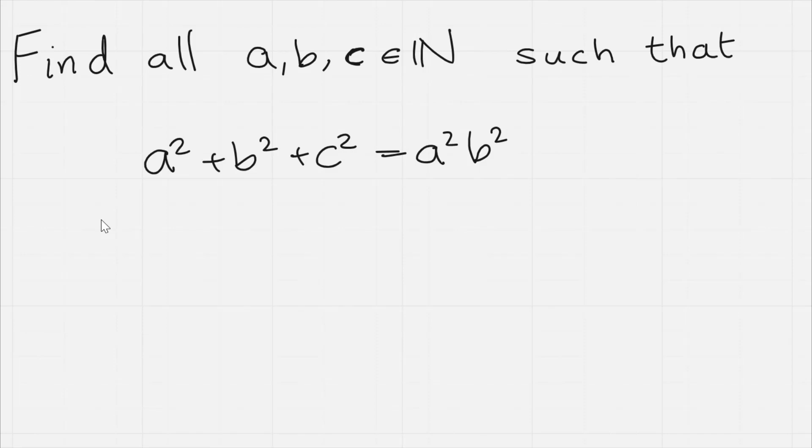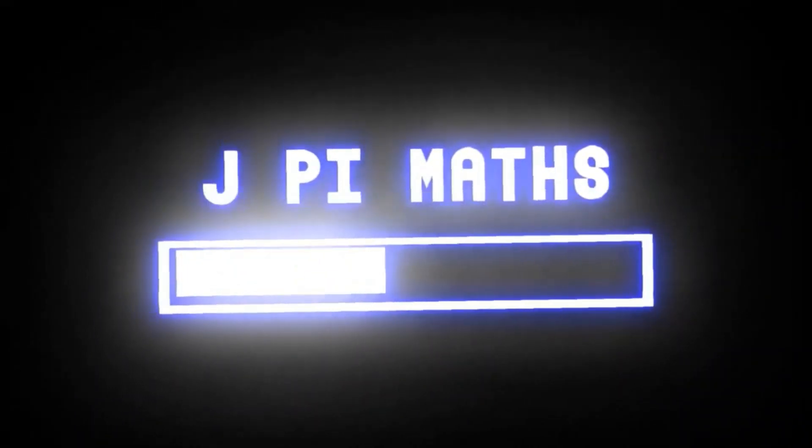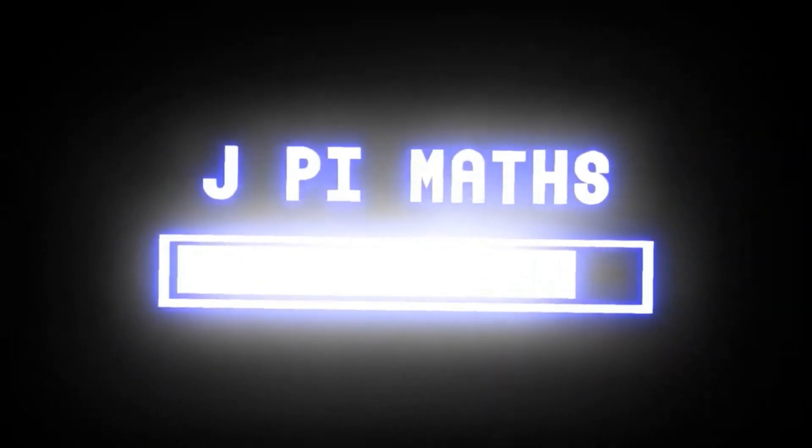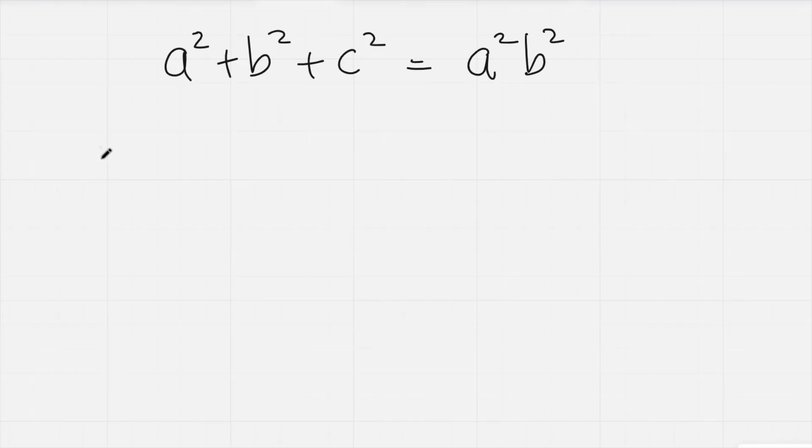Okay, so one of the tricks we're going to use in this solution is to look at this mod 4, because square numbers are quite nice mod 4. If we have an integer x and we square it, this is always going to be either 0 or 1 mod 4.